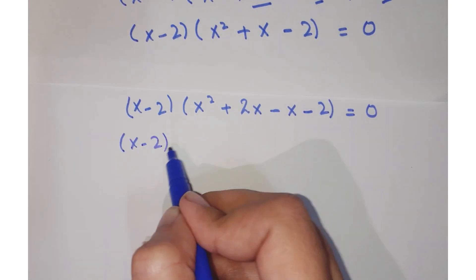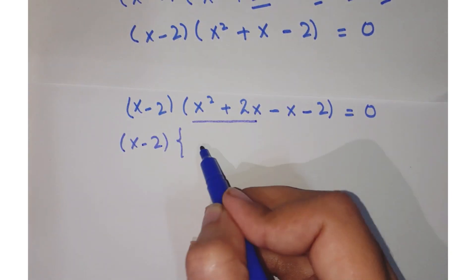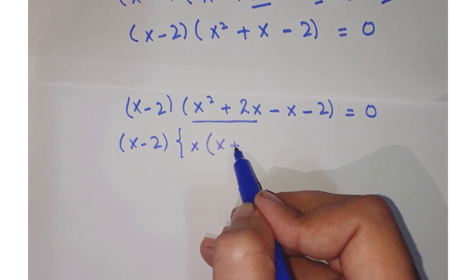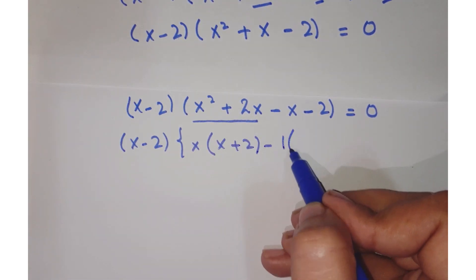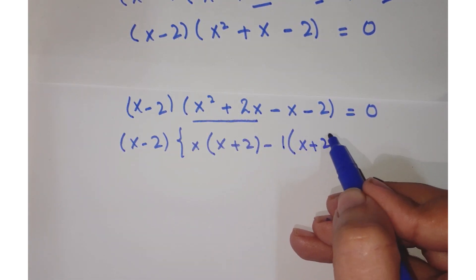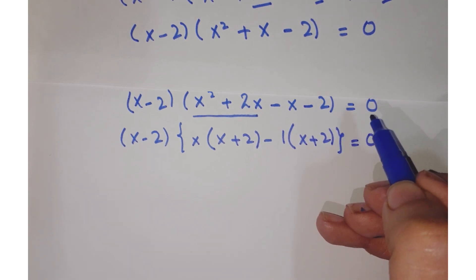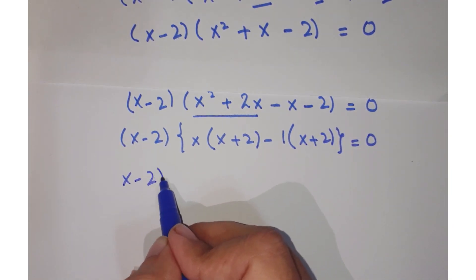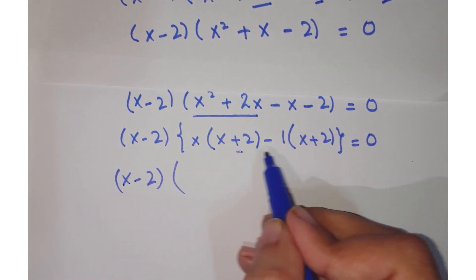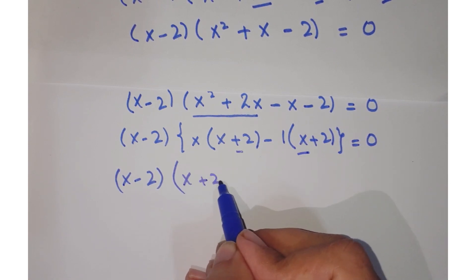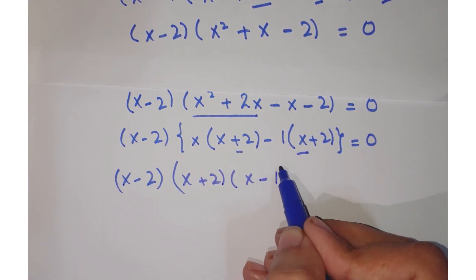Further, out of these two terms take out x common: x(x+2), and taking out -1: -1(x+2). Then (x-2)(x+2)(x-1) = 0.